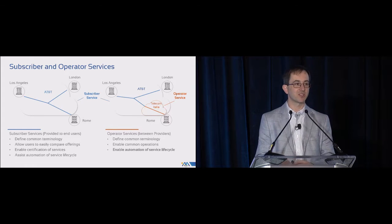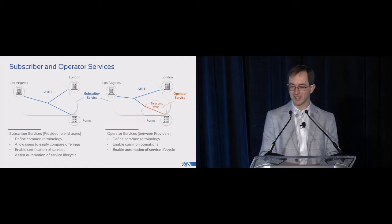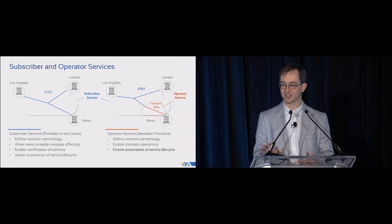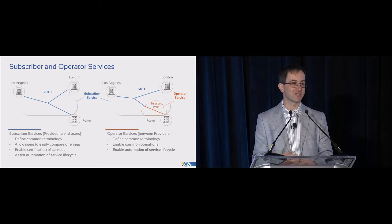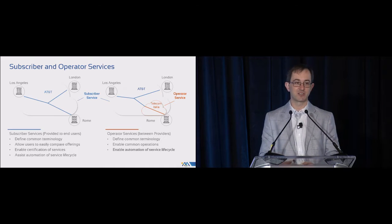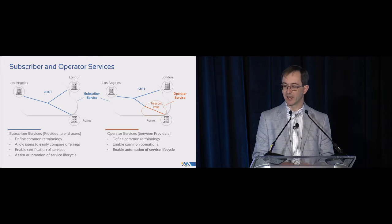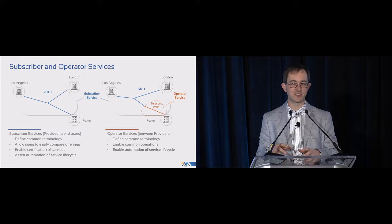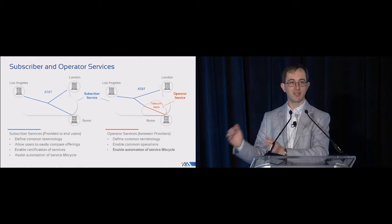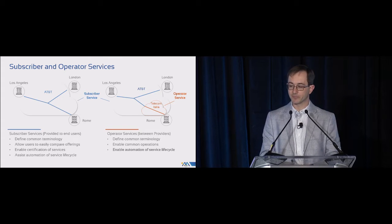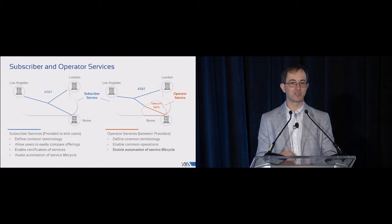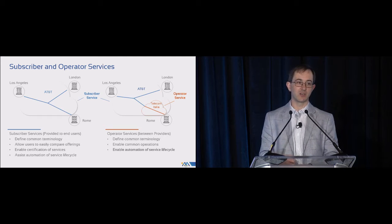Then we have operator services — the wholesale side: services sold and bought between service providers and operators. For example, if AT&T doesn't have their own presence in Rome, they might contract with Telecom Italia to reach the subscriber's location. This is what we call an operator service — essentially subcontracting part of the end-to-end service sold to the subscriber. It's normally an access piece, though it can also be transit. The key reason to define these is to enable automation and orchestration of those services in a standard way.